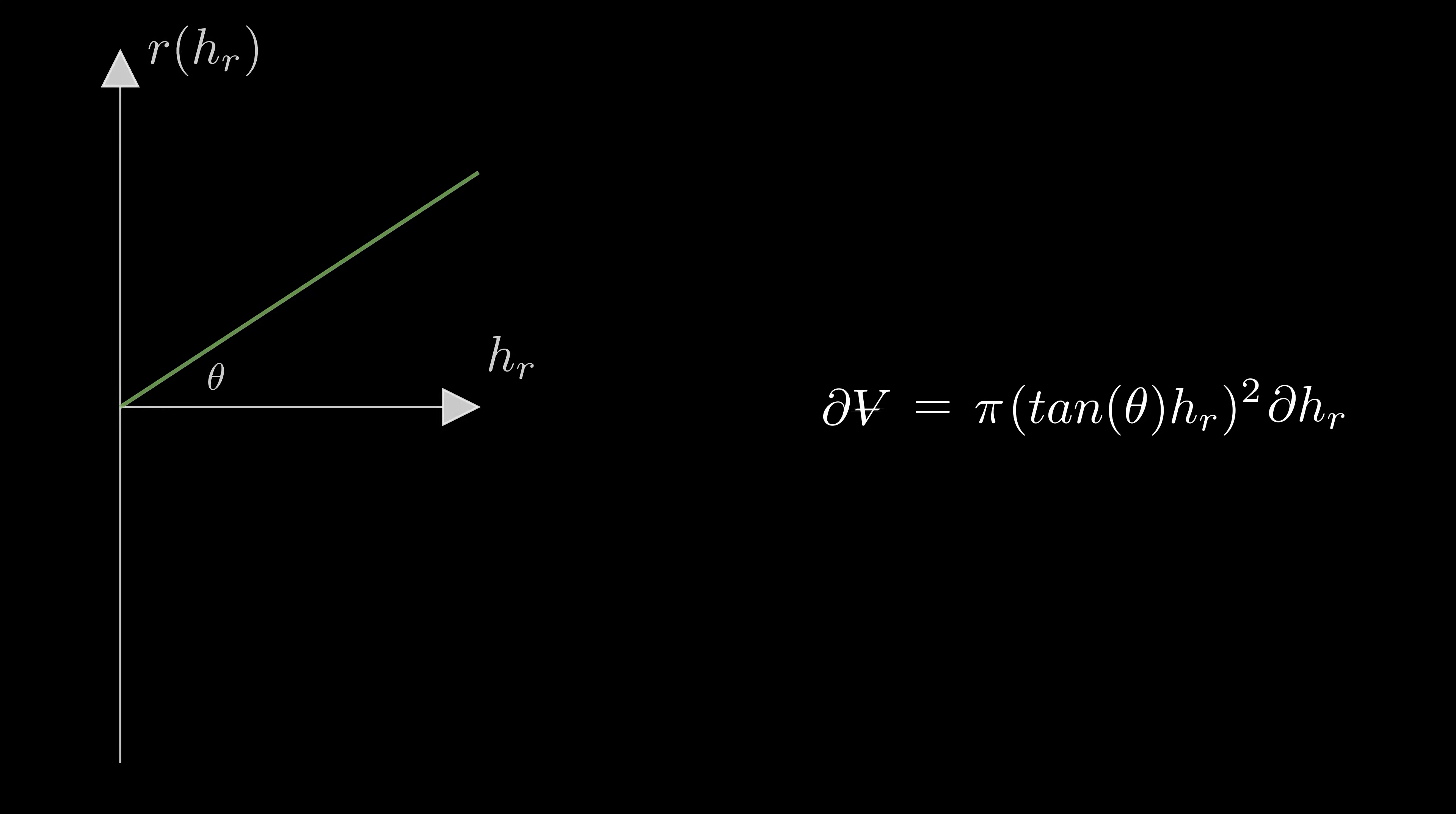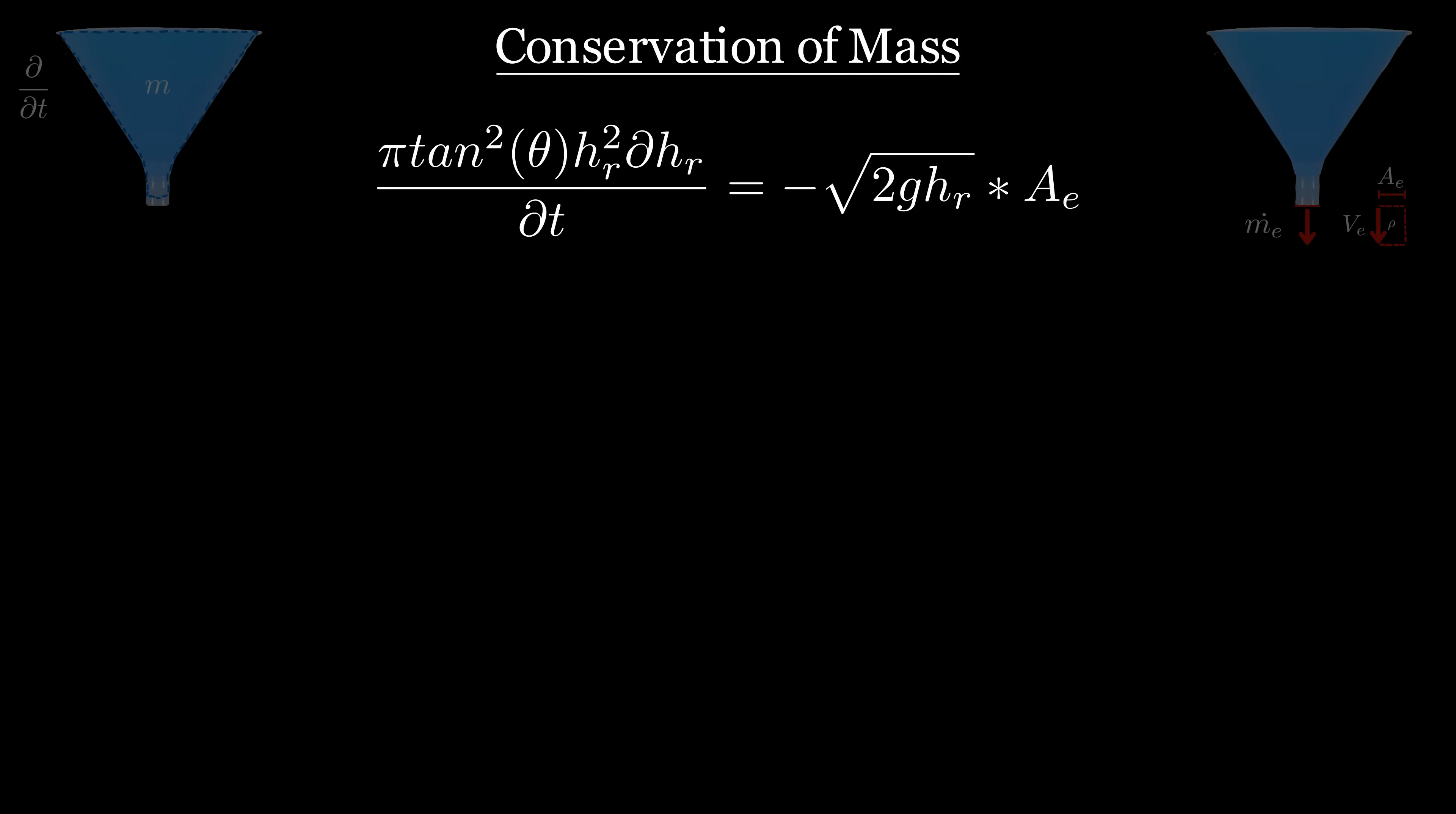After plugging this function in we've now related the volume to the height, so we can plug this equation back into the conservation of mass, and we've got our final differential equation where the only non-constants are height and time, which was the ultimate goal. To solve this we need to separate the h and t terms and integrate.